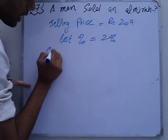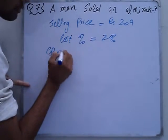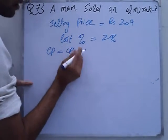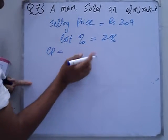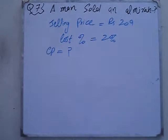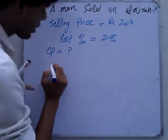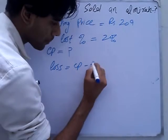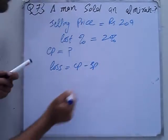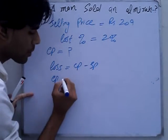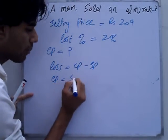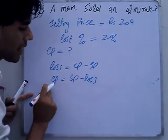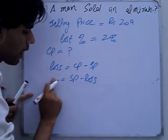Find the cost price. If there is a loss, then cost price minus selling price equals loss. So the cost price formula is: cost price is equal to selling price minus loss.